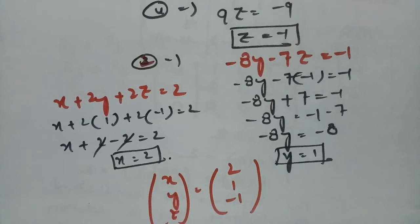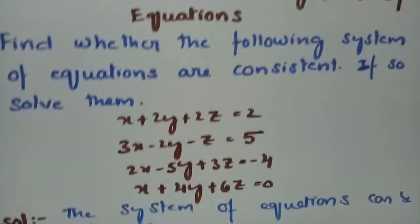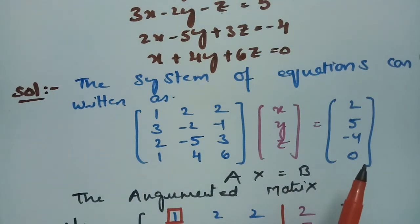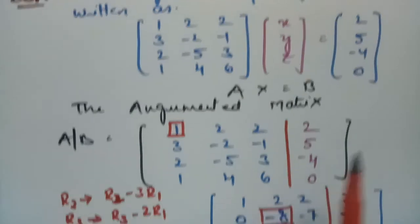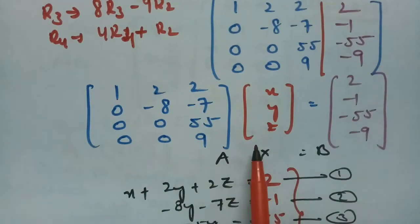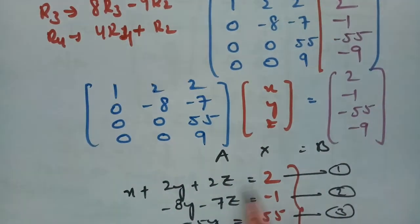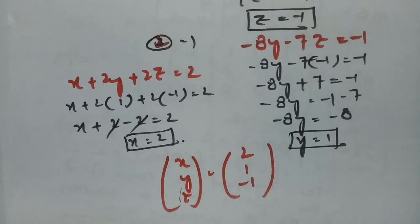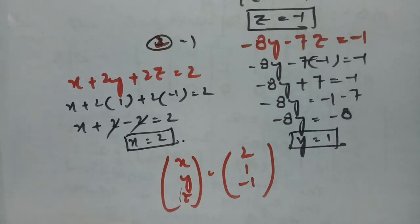So, after solving the system of equations, the values are x equals 2, y equals 1, and z equals minus 1. This is the solution. To summarize: we write Ax equals B, form the augmented matrix, find the rank using row reduction, convert back to equation form, and solve. These are repeatedly asked questions, so please practice and try by yourself. If you like it, share it with your friends, leave a comment below, and give a thumbs up.